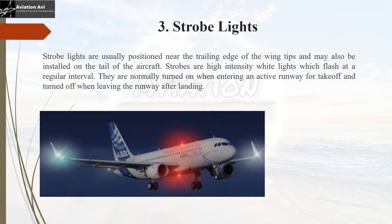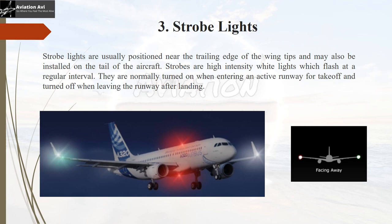Next in the series are strobe lights. Strobe lights are usually positioned near the trailing edge of the wing tip and may also be installed on the tail of the aircraft. They are high-intensity white lights that flash at regular intervals. They are normally turned on when entering an active runway for takeoff and turned off when leaving the runway after landing. When a pilot sees two white strobe lights on the wing tips ahead, it signifies the aircraft in front is moving away.